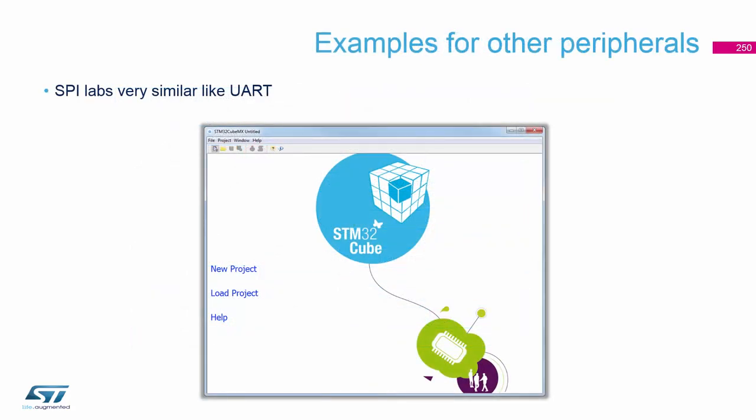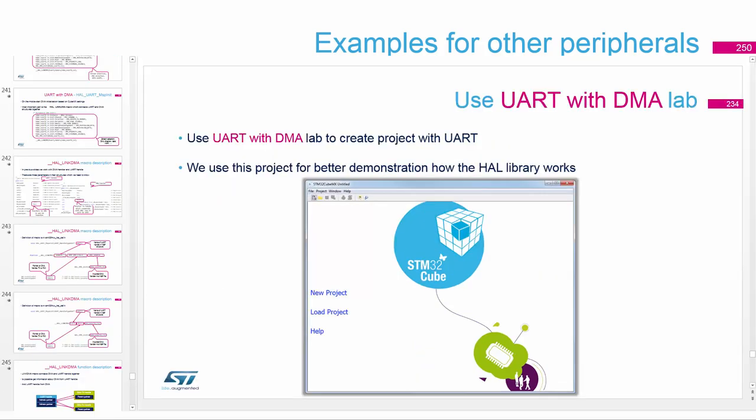The USART with DMA is completely non-blocking. The key difference versus the interrupt version: with interrupts we get an interrupt for each received byte, but with DMA we only get an interrupt at the half-transfer or transfer complete. This means DMA offloads the CPU much more — which is the primary reason to use DMA with UART.